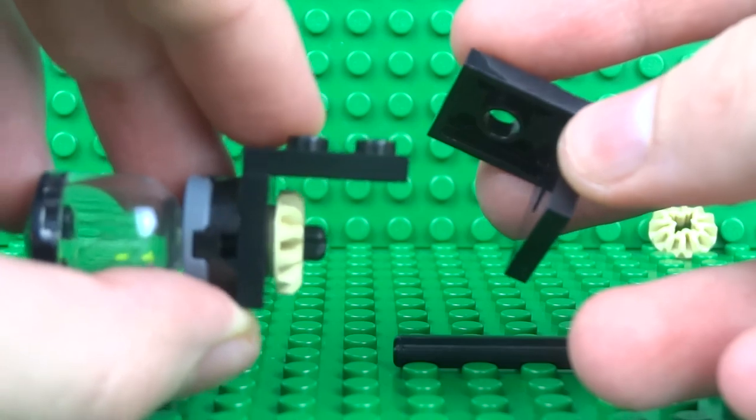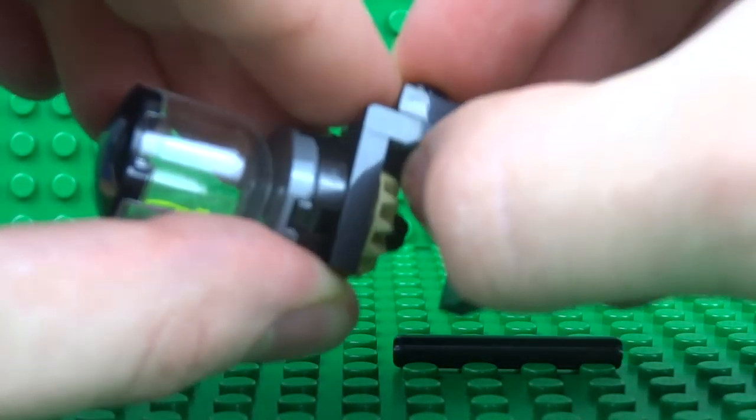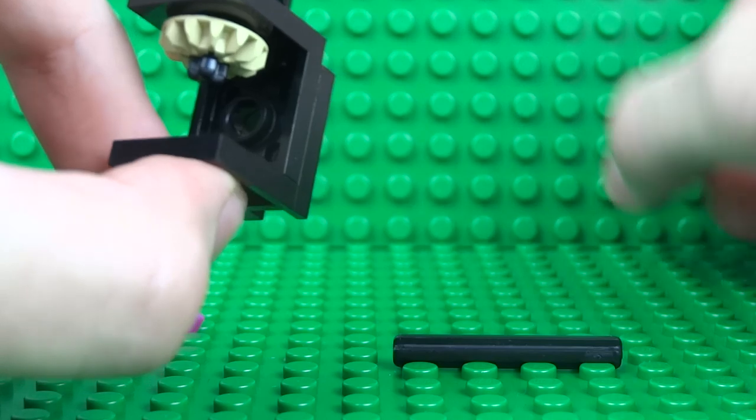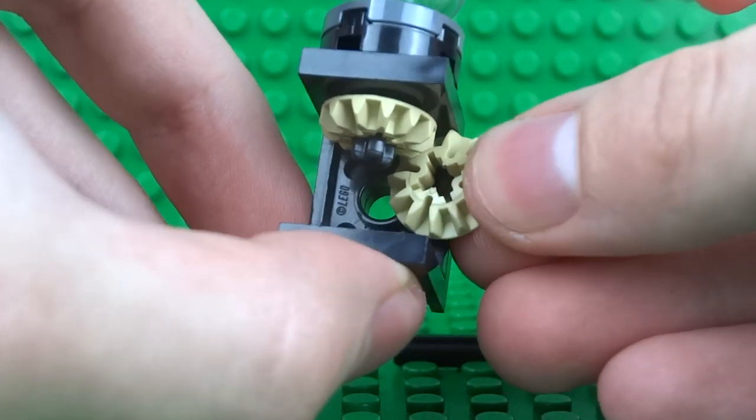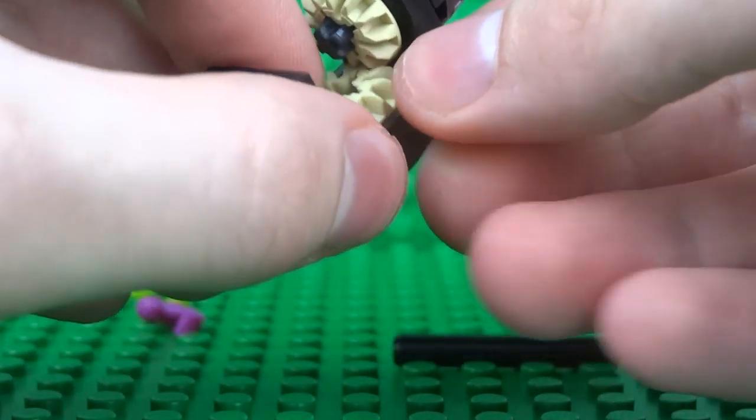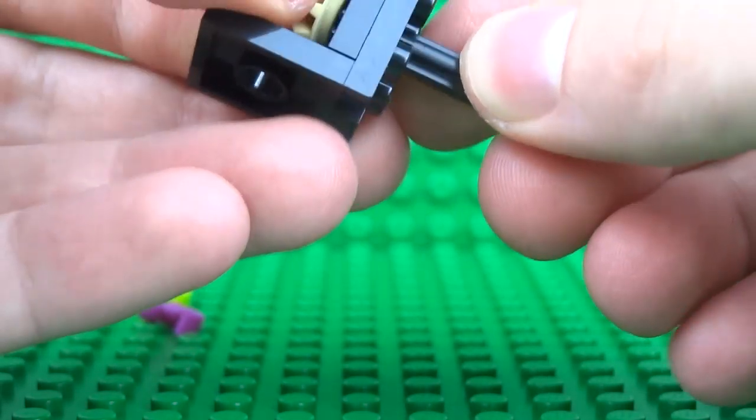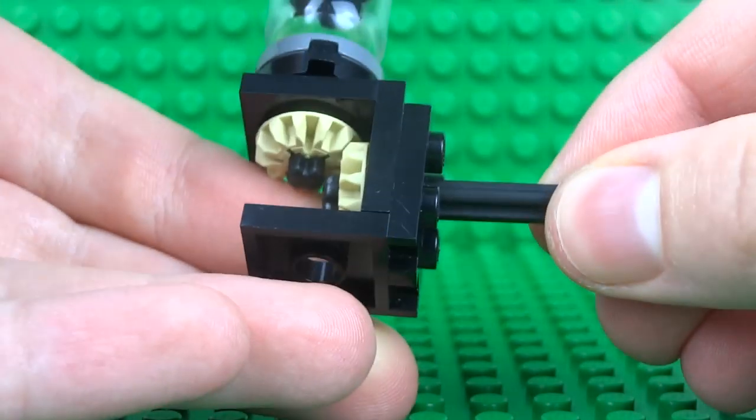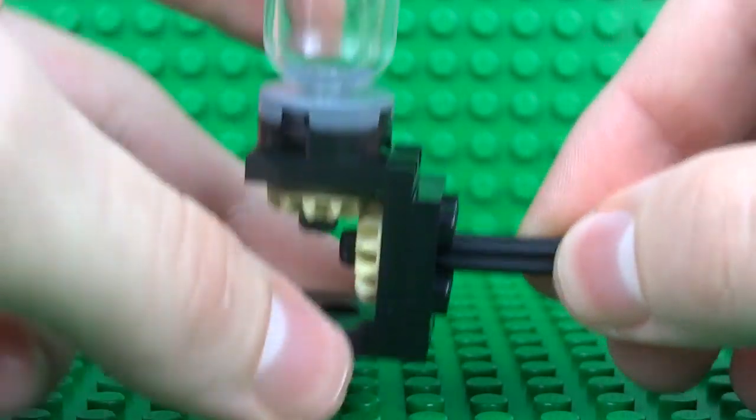So then we can take the second bracket and attach it on the outside of the first bracket, then slide your second bevel gear through and secure that one in place with the one by four axle.